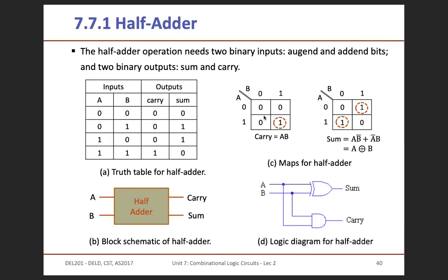With the help of a K-map, we find the boolean expression for carry and sum. Using the K-map for carry, we find the boolean expression. For sum, again with the K-map, we find the boolean expression. In the case of carry, the boolean expression is A·B, which means an AND gate. For sum, the boolean expression leads us to use an XOR (exclusive OR) gate.